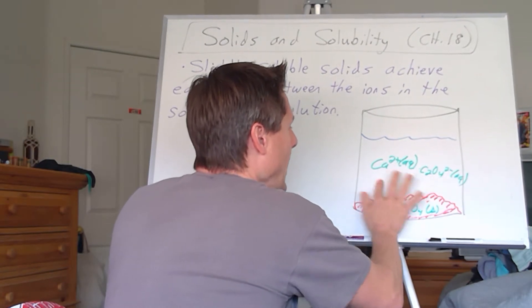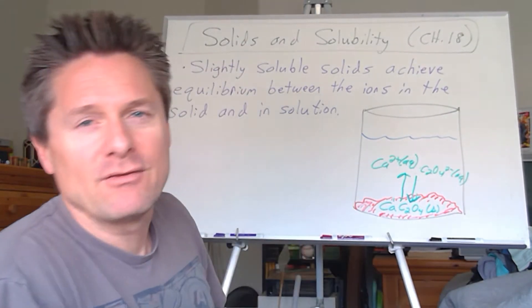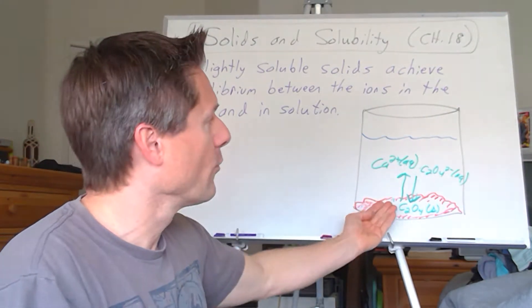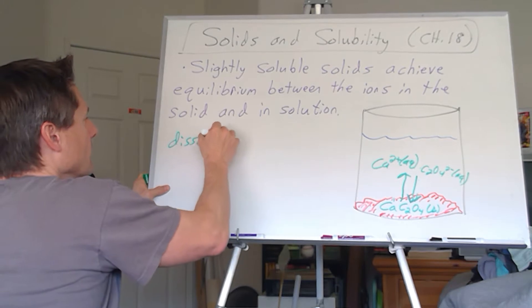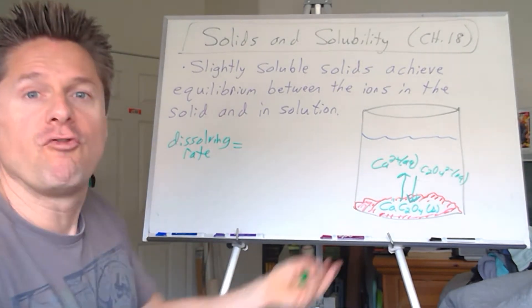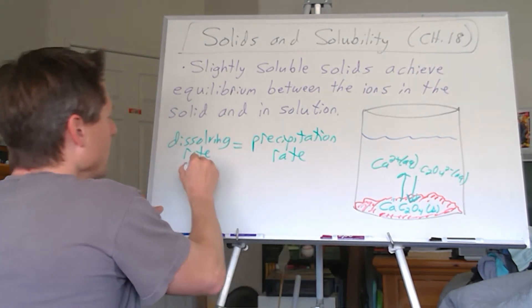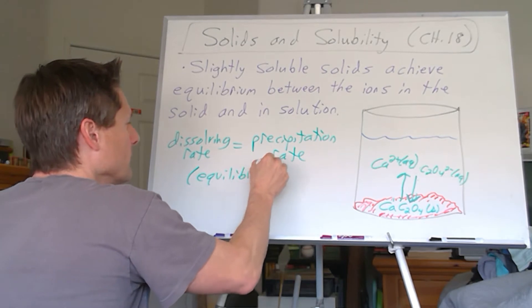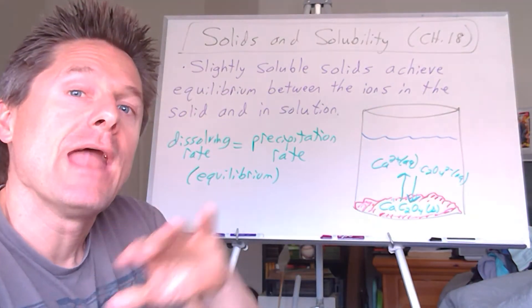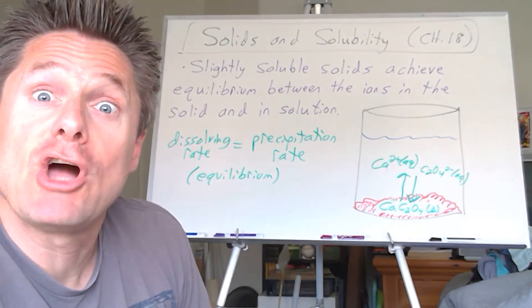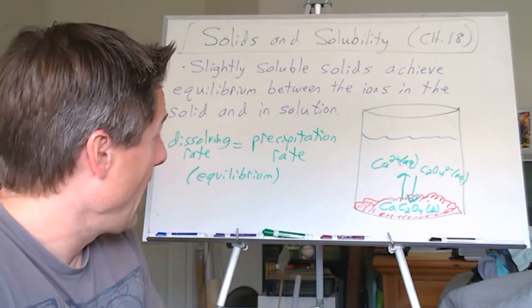Those ions can recombine and go back to form the solid. Sooner or later you form an equilibrium where the rate of dissolving equals the rate of precipitation. When the rate of ions dissociating from the solid equals the rate of them recombining and re-solidifying, we've got equilibrium. At that point the ion concentrations are constant, and we can throw ICE tables at this and set up equations — that's pretty straightforward.